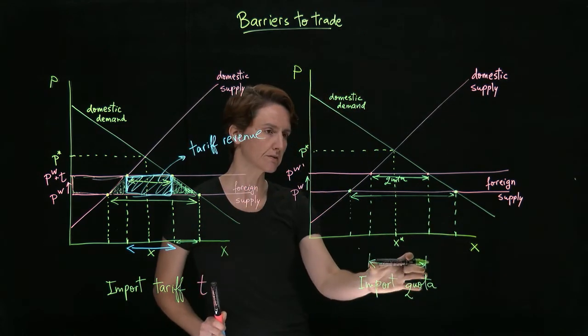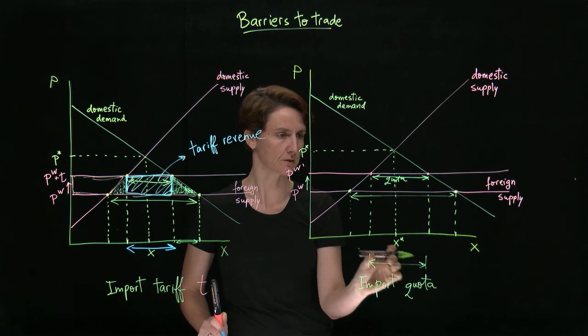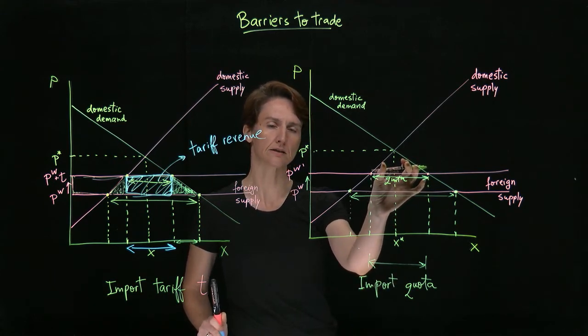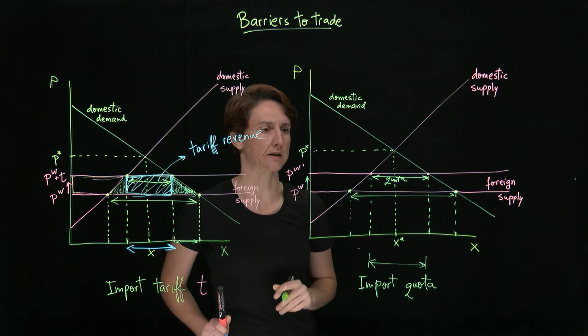So the more restrictive the quota, the smaller this amount, the higher the price of foreign goods will be bid on this market.